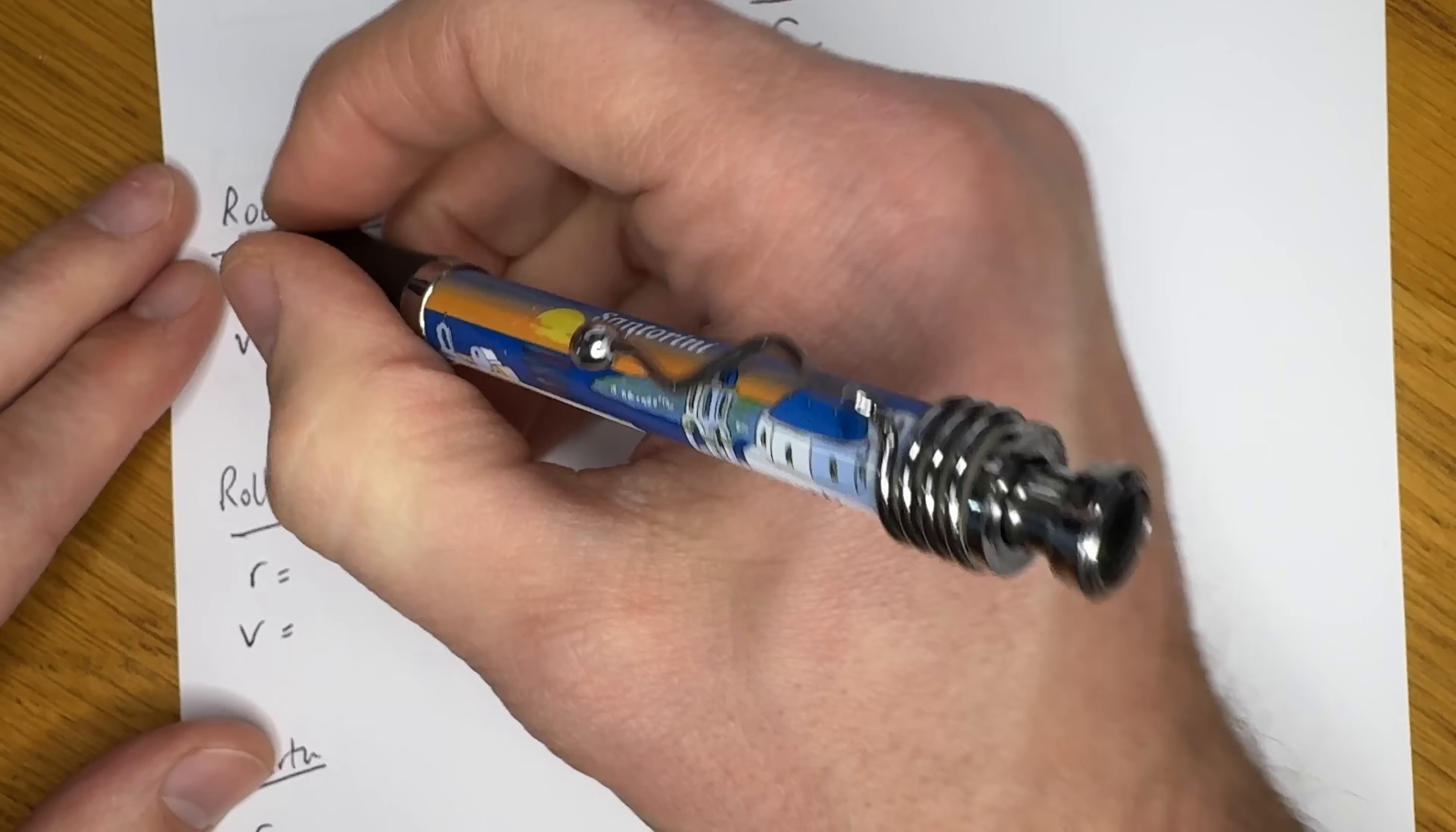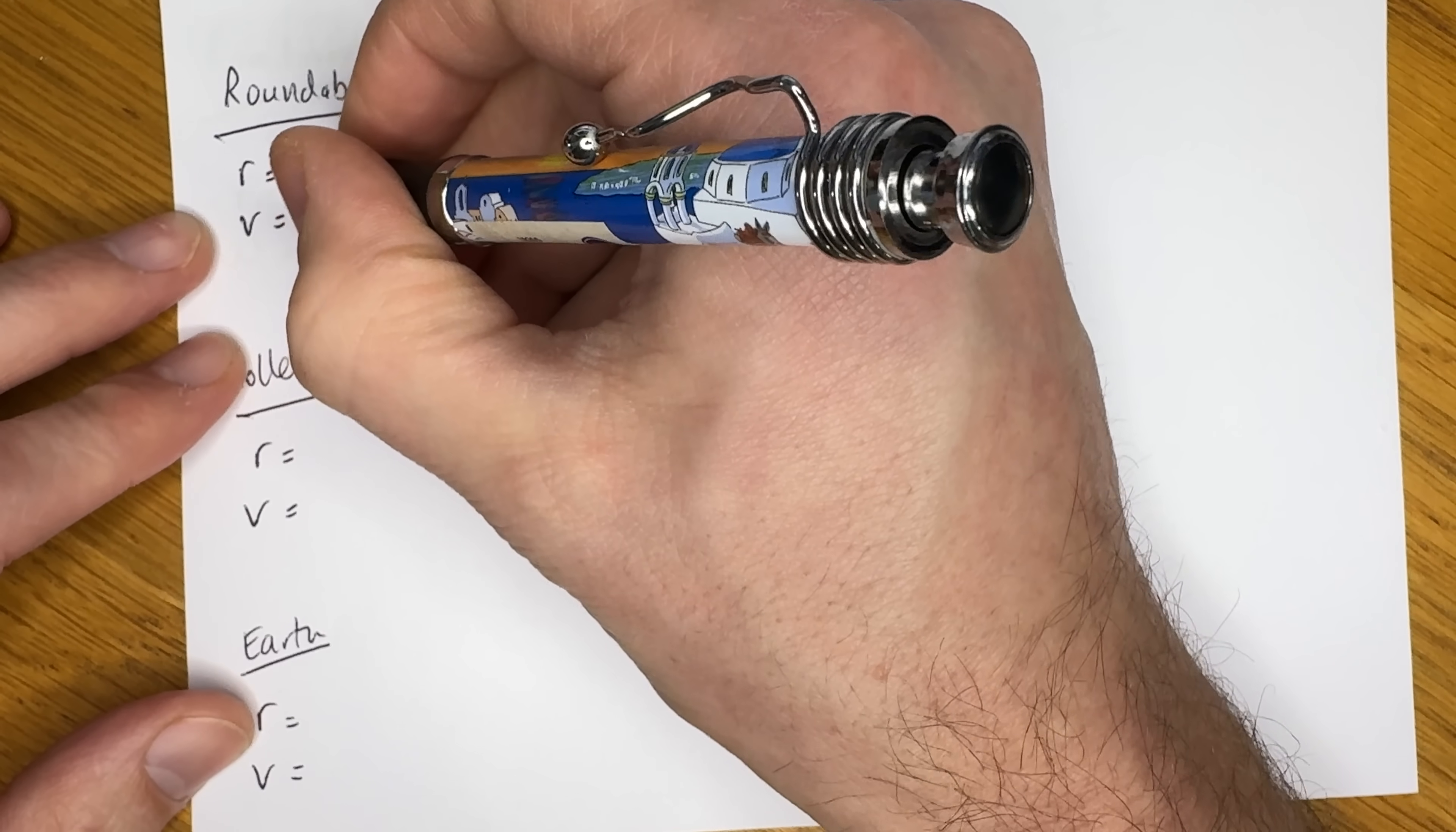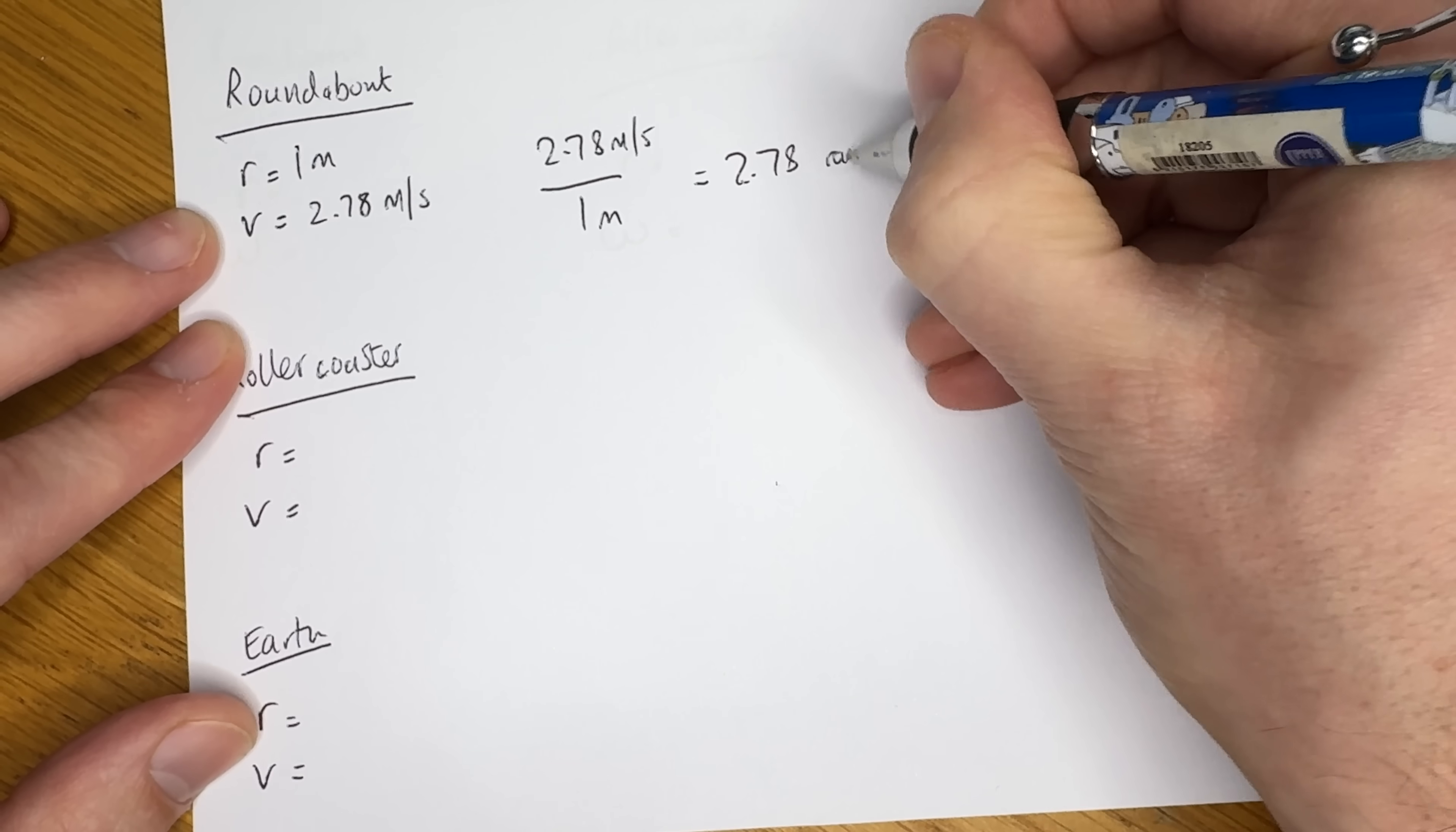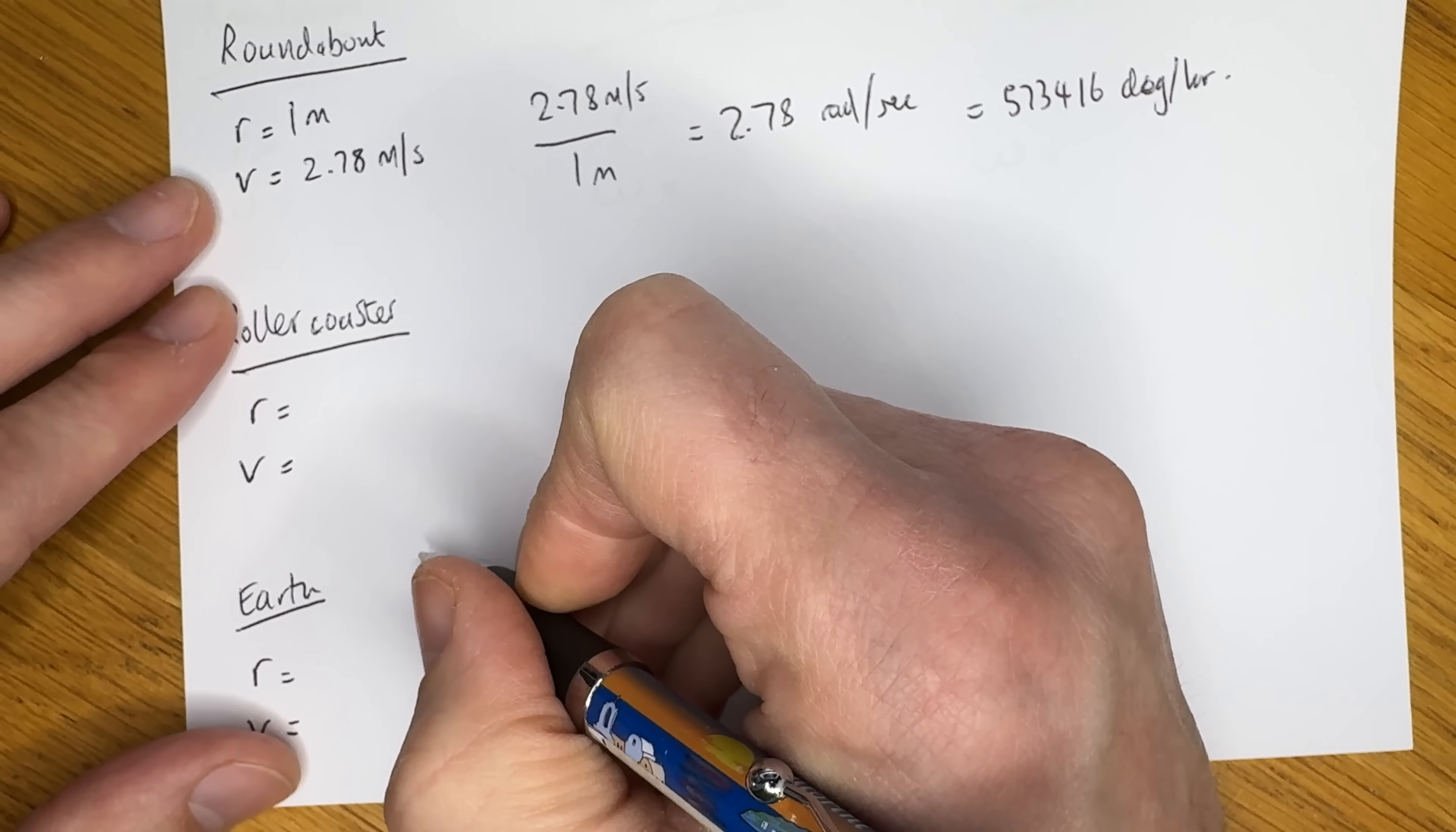So with all that out the way, let's figure out the angular velocity of our three objects, shall we? We'll start with our roundabout. I think it's fair to say that the radius is one metre. And we can convert the kilometres per hour to metres per second, which means that we have an equation of 2.78 metres per second divided by one metre, which is, of course, 2.78 radians per second. Or, for the OGs among us, 573,416 degrees per hour.